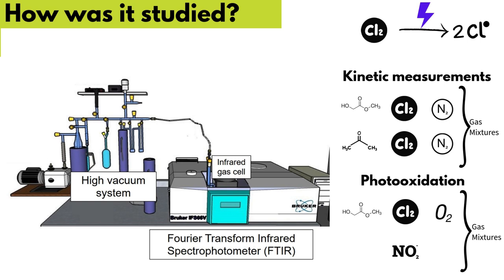Gas mixtures for kinetic experiments were prepared in the reaction cell using MG or acetone, chlorine, and nitrogen. For photo-oxidation, nitrogen was replaced by oxygen, and nitrogen dioxide was added when required. The mixtures were irradiated with black lamps to produce the rupture of the chlorine molecule and the consequent formation of chlorine atoms. The identification and quantification of reaction products were performed using reference infrared spectra.